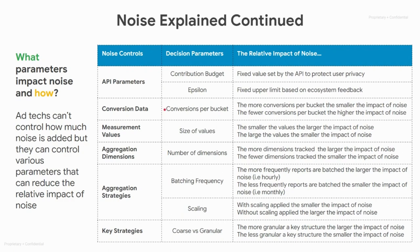Next, we have conversion data — in this case, that would be conversions per bucket. The more conversions per bucket, the smaller the impact of noise. If we think back to the blue and orange bars from the previous slide, if you have more conversions per bucket, then your blue bar would be larger and therefore the orange bar, or noise, would have a smaller relative impact.